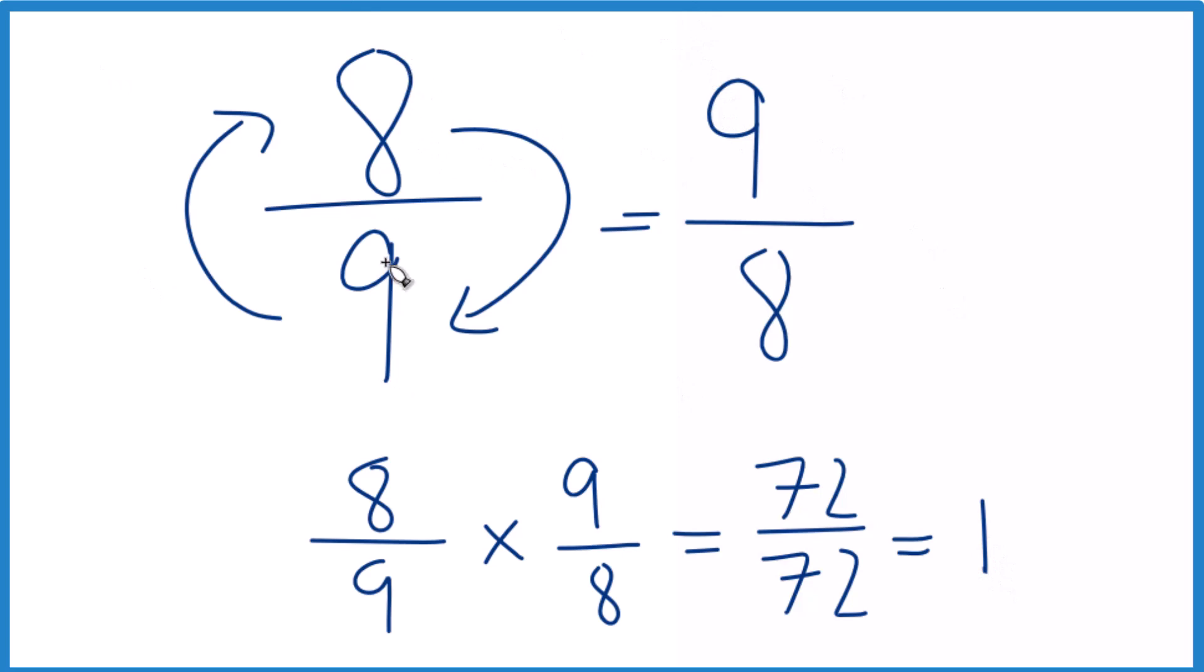The reciprocal for eight-ninths equals nine-eighths. This is an improper fraction, if you wanted to change it to a mixed number. Eight goes into nine one time with one left over, bring the eight across.